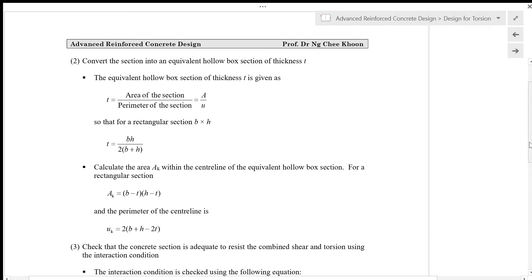Then we calculate the area AK within the center line of the equivalent hollow box section. For a rectangular section, AK = (B - T)(H - T).